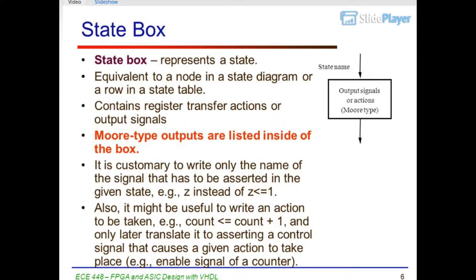State Box: Represents a state. Equivalent to a node in a state diagram or a row in a state table. Contains Registered Transfer Actions or Output Signals. Moore Type outputs are listed inside the box. It is customary to write only the name of the signal to be asserted in the given state — for example, Z instead of Z <= 1. It may also be useful to write an action, for example count <= count + 1, and later translate it to asserting a control signal, such as the enable signal of a counter.